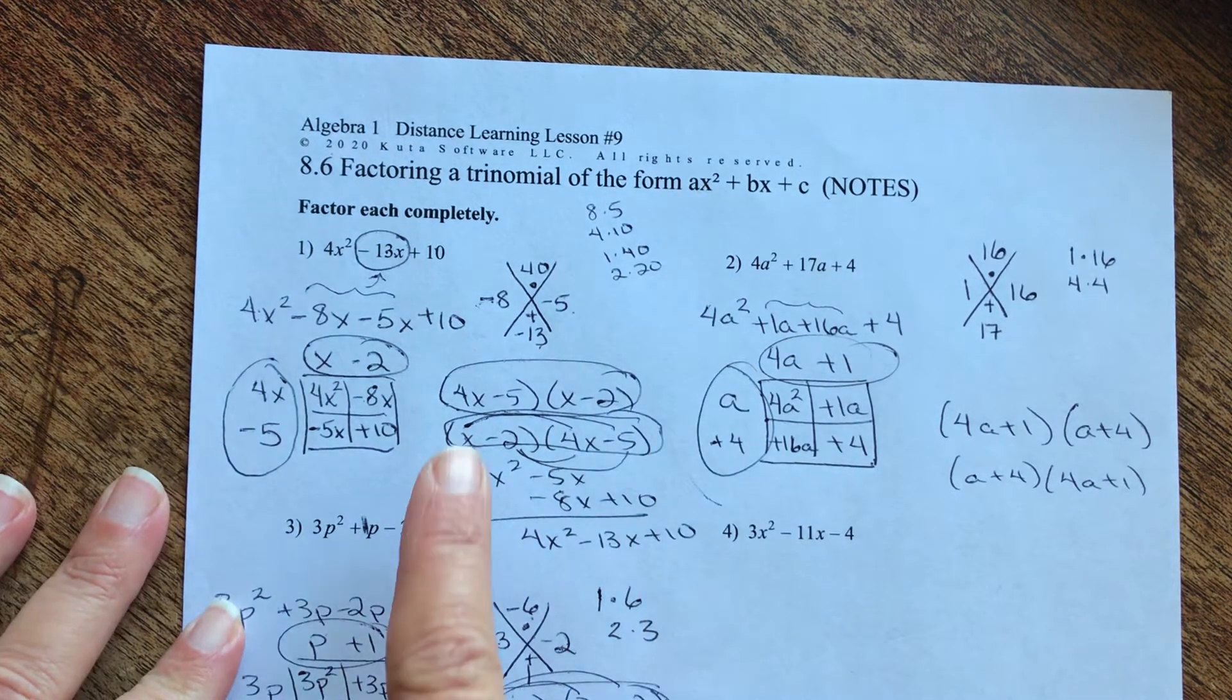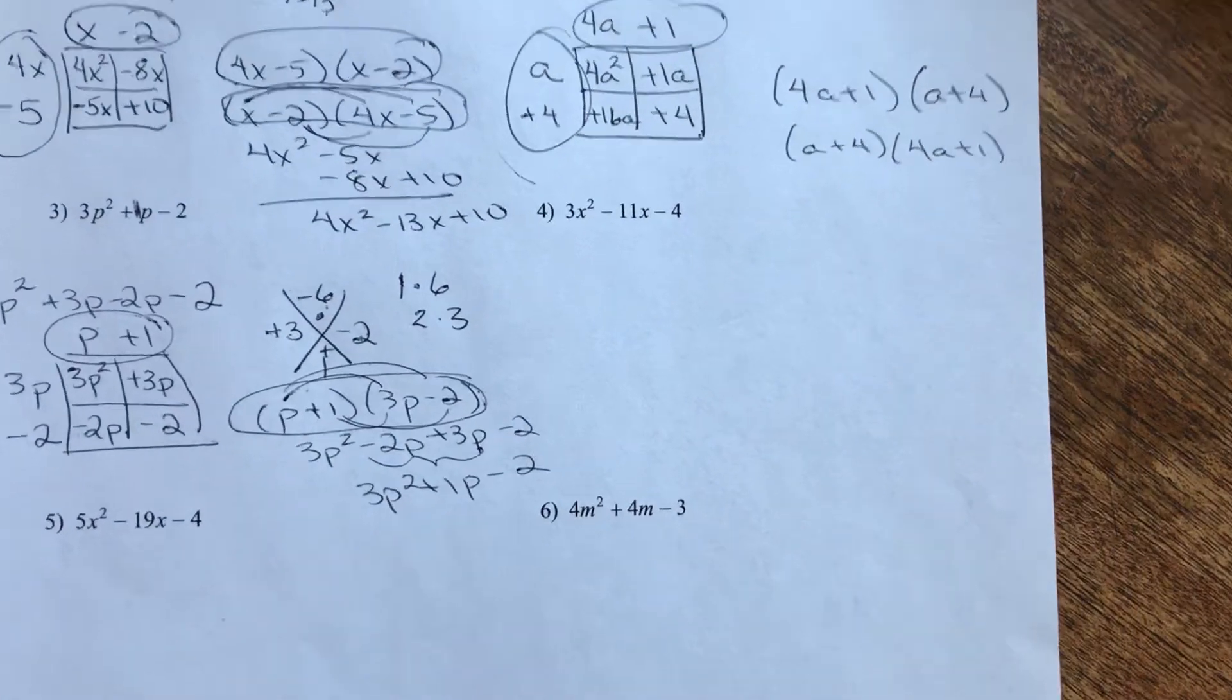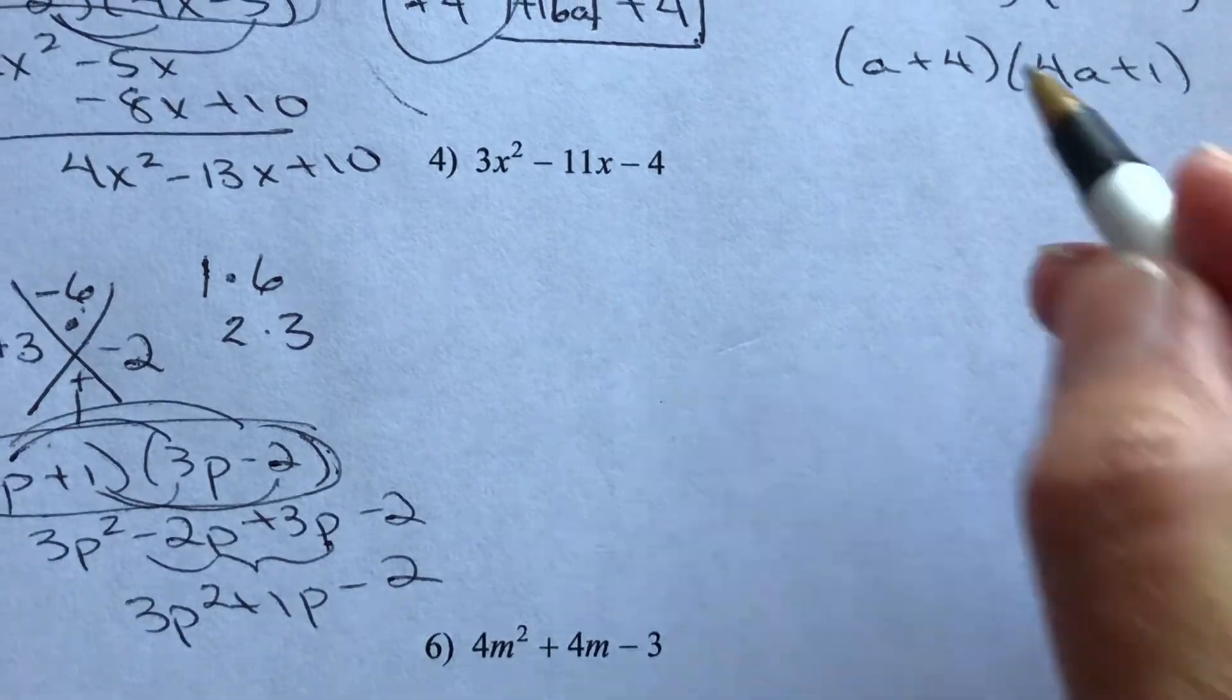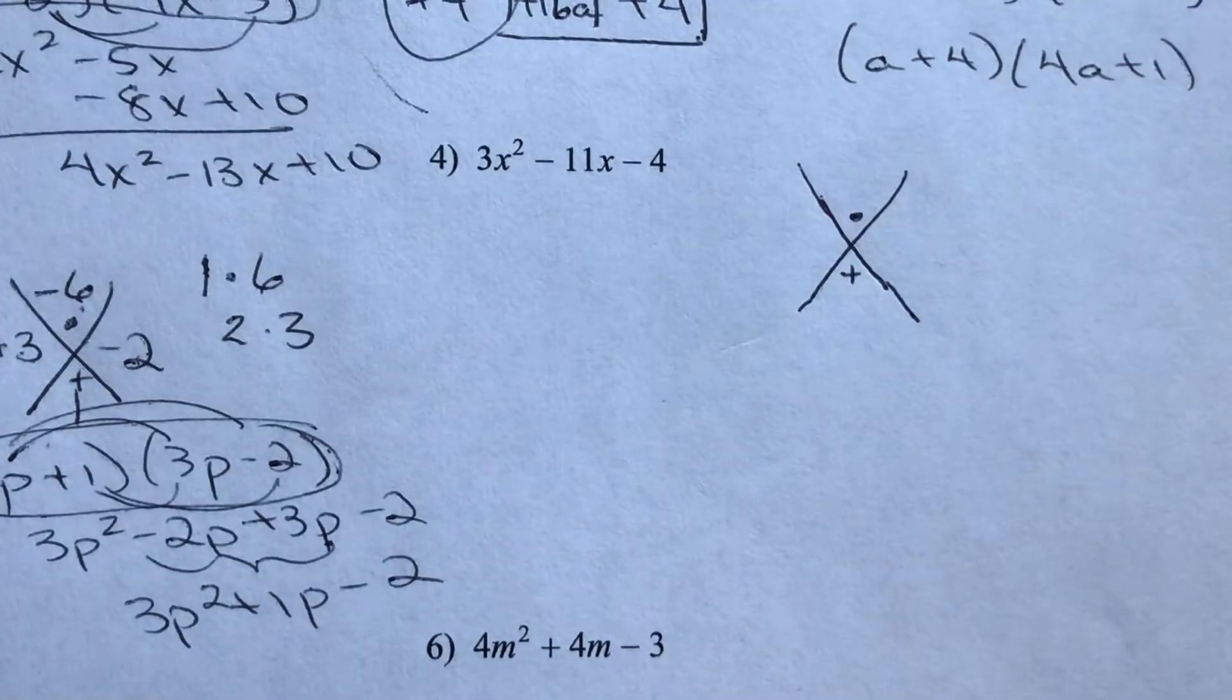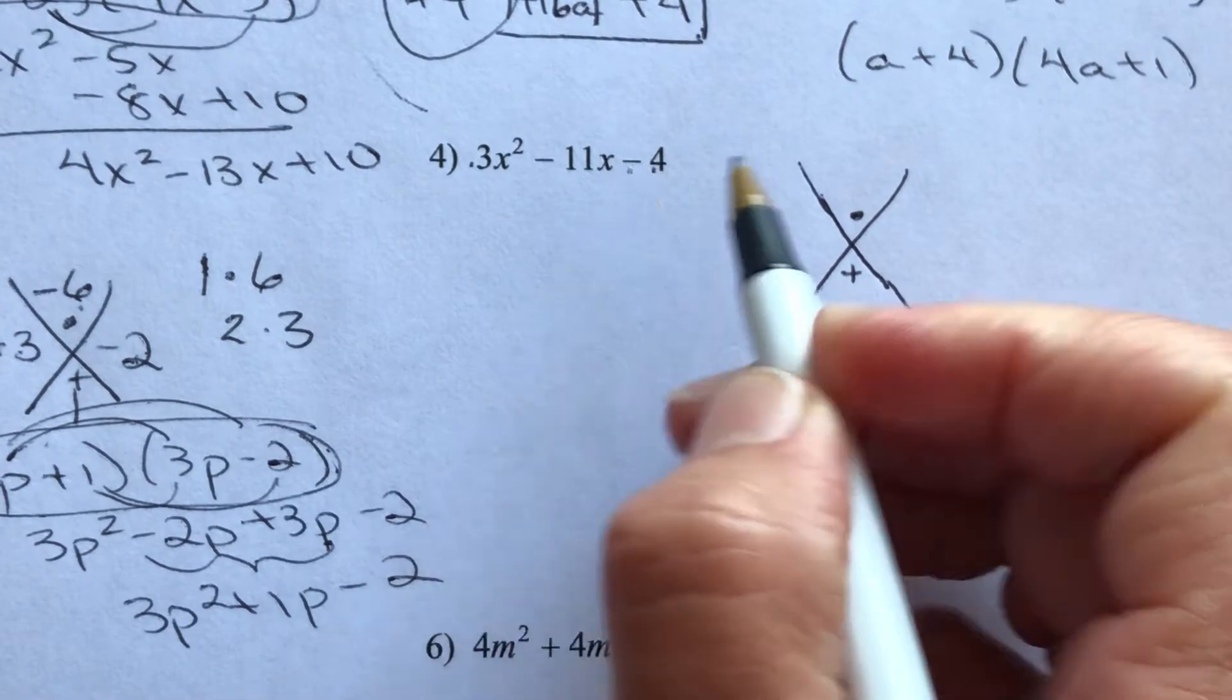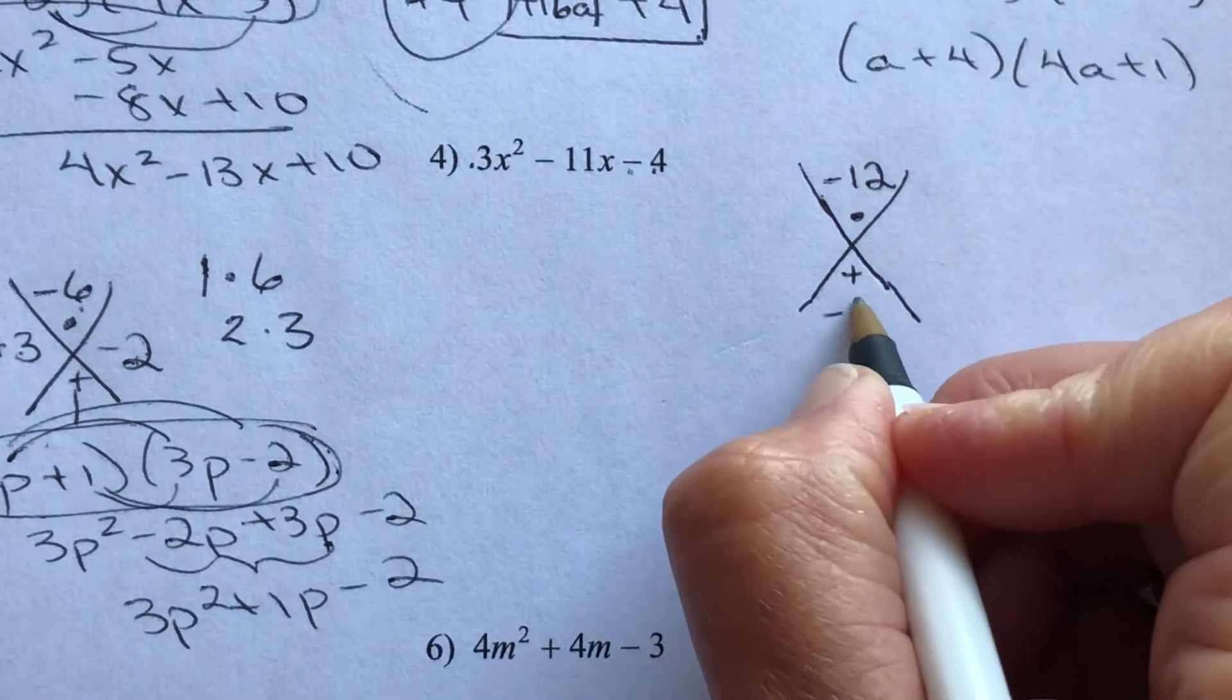So let's take a look. We've already done 1, 2, and 3. We're on question number 4. Let's give it a look. We're going to start with our X method. We're going to put our dot, our addition sign. So we're looking for 3 times 4, but it's going to be negative 12, and then negative 11.